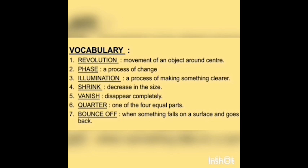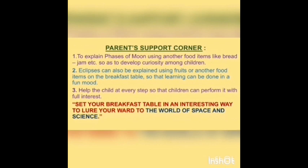The last one is bounce off — when something falls on a surface and goes back. For example, when a ball hits a wall and comes back toward you, the ball bounces off. Moving further, there are some ideas for the parents so that they can explain the phases of moon to the child more clearly. Number one, explain phases of moon using other food items like bread, jam, etc., so as to develop curiosity among the children. Number two, eclipses can be explained on the breakfast table using fruits or other food items so that learning can be done in a fun mood. Number three, help the child at every step so that they can perform it with full interest. Set your breakfast table in an interesting way to lure your child into the world of space and science.